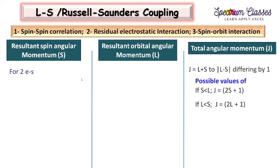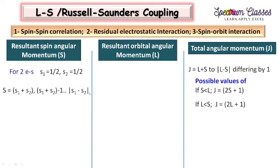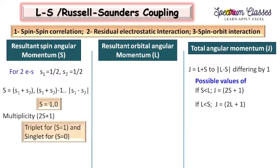Now I will elaborate further. Suppose I have two electrons: the first electron has spin one half and the second electron also has spin one half. Then the resultant will come as S1 plus S2 down to the modulus of S1 minus S2. Adding S1 plus S2 gives 1; subtracting gives modulus of 0. So we have two values for the resultant spin angular momentum: 1 and 0. From S we can calculate the multiplicity 2S plus 1. For S equal to 1 we have a triplet, and for S equal to 0 we have a singlet spin state for the two electrons.